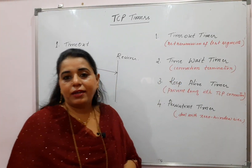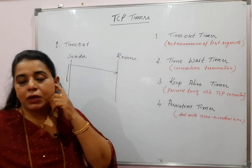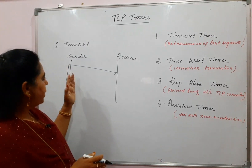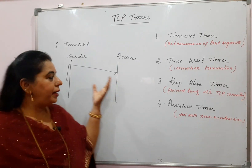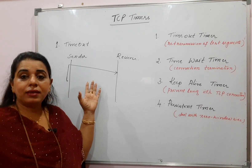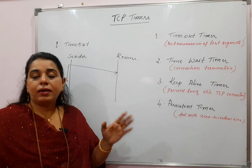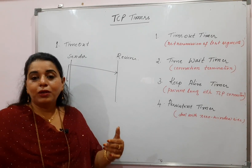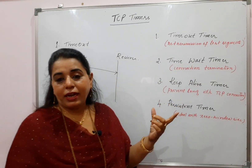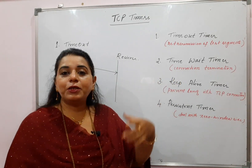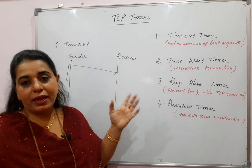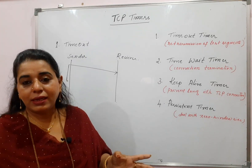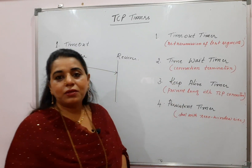We have one more called the time wait timer, and this is used during connection termination. Normally, once the connection gets terminated, assume that the sender has terminated the connection but there are certain segments arriving a bit late. In that case, the sender should not terminate the connection — it should wait for those late-arriving segments. But how long to wait? The sender sets this timer called the time wait timer. Before this timer expires, it should receive all those segments arriving late. Otherwise, it can terminate the connection by sending an acknowledgement for the second FIN segment and close the connection.